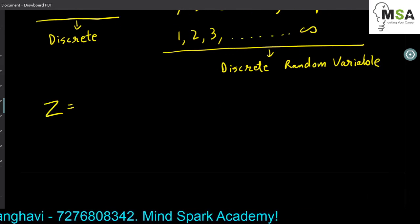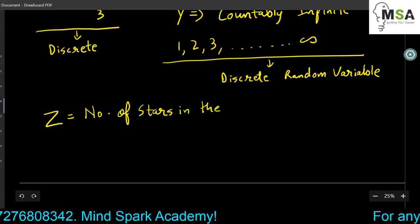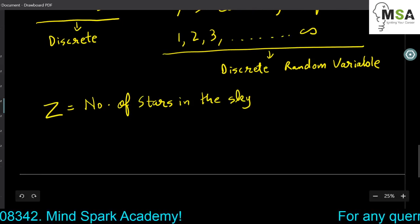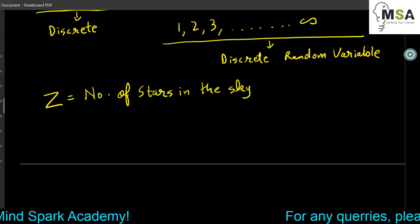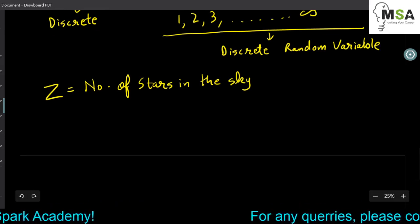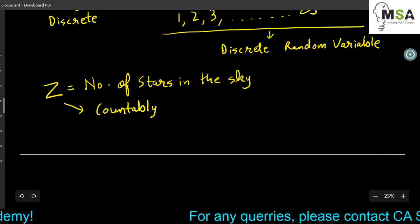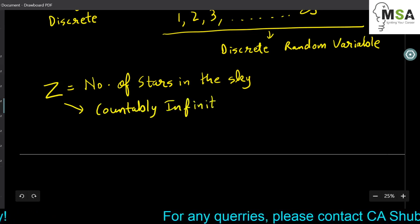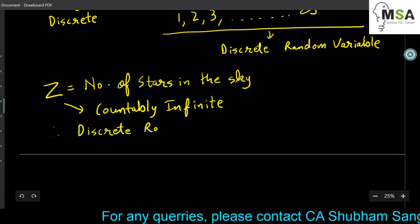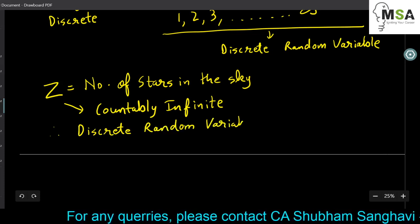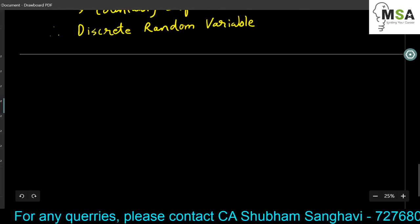Whenever a random variable can assume countably infinite numbers, it is a discrete random variable. Another example: number of stars in the sky. It is impossible to finish counting, but they can still be counted as 1, 2, 3 and so on. There are infinite stars but they are still countable, so this is also a countably infinite and therefore discrete random variable.